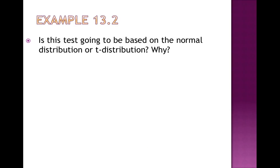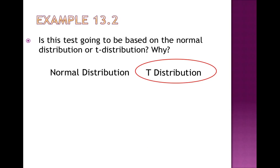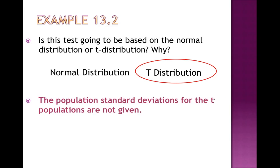This is a t-distribution because the standard deviations for the populations are not given — the population standard deviations are not given, and that's enough to state that we're using the t-distribution. There is a way to do a test when you have the population standard deviations, but most of the time in the real world if you do a test, it involves the sample standard deviation and not the population standard deviation.